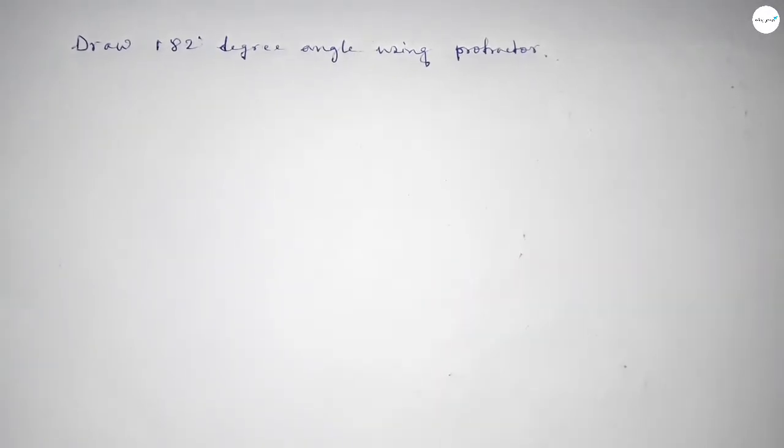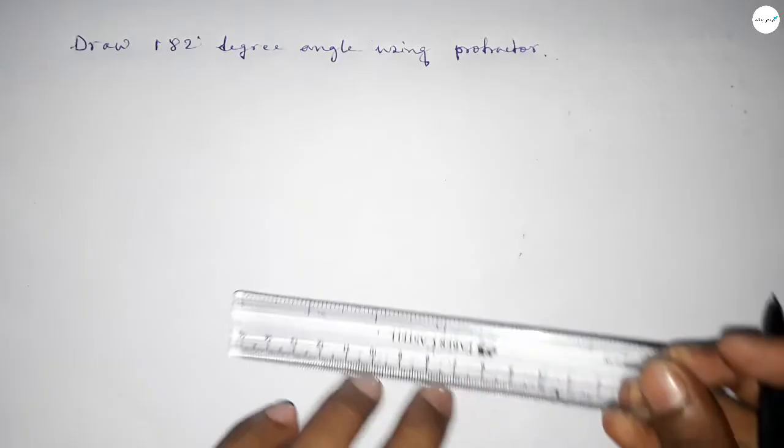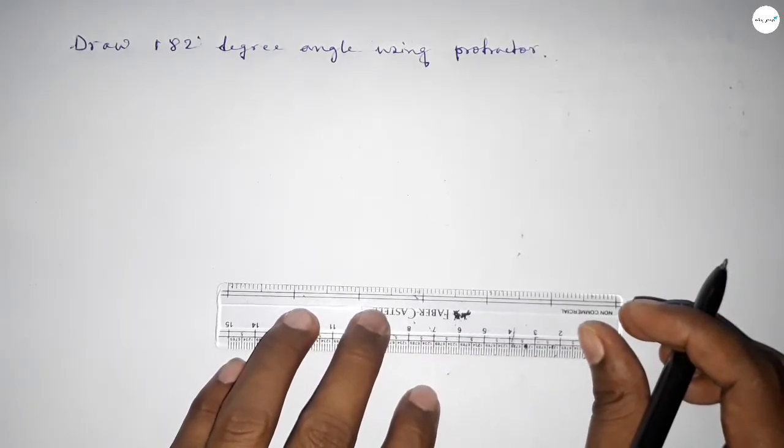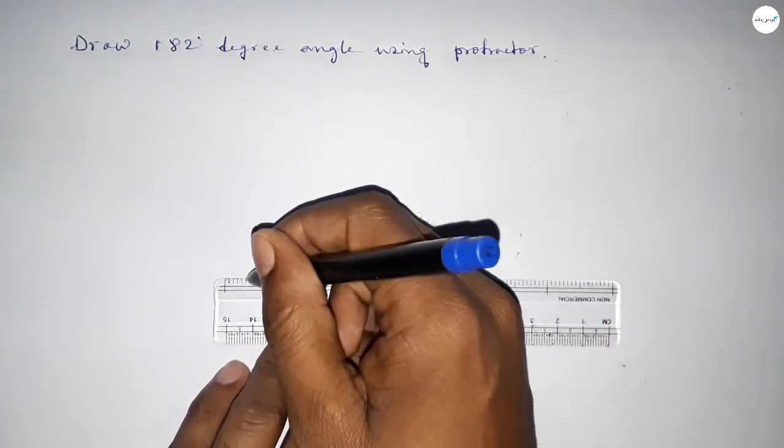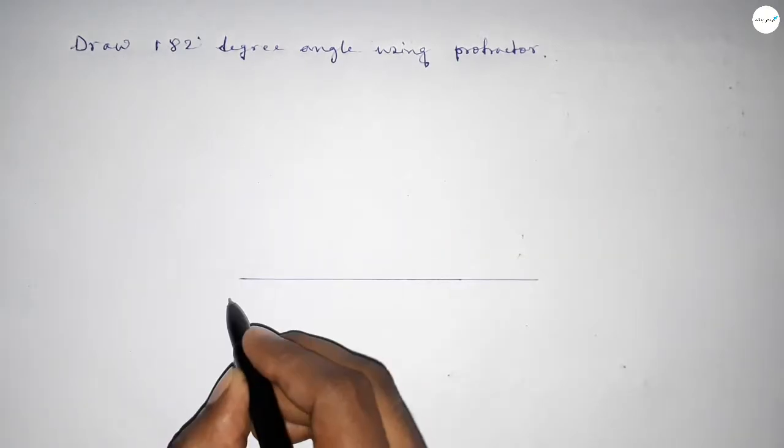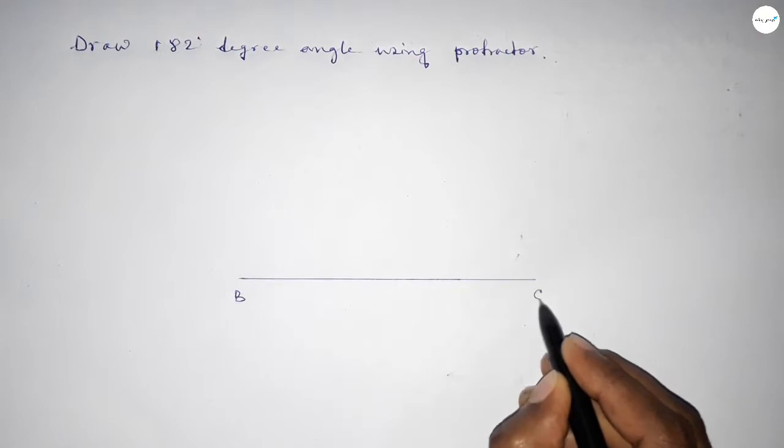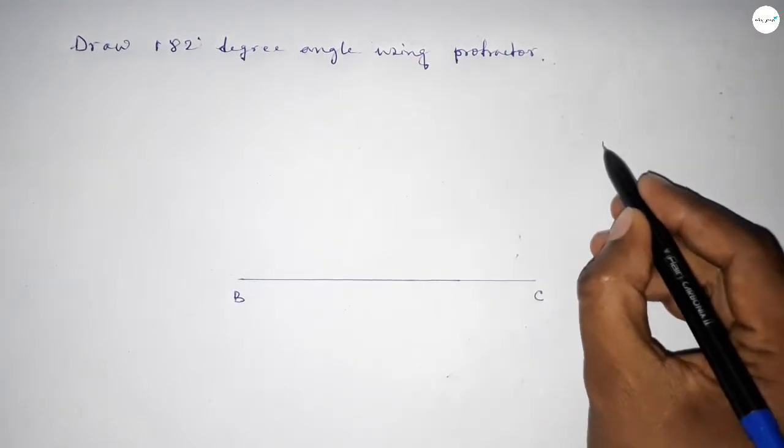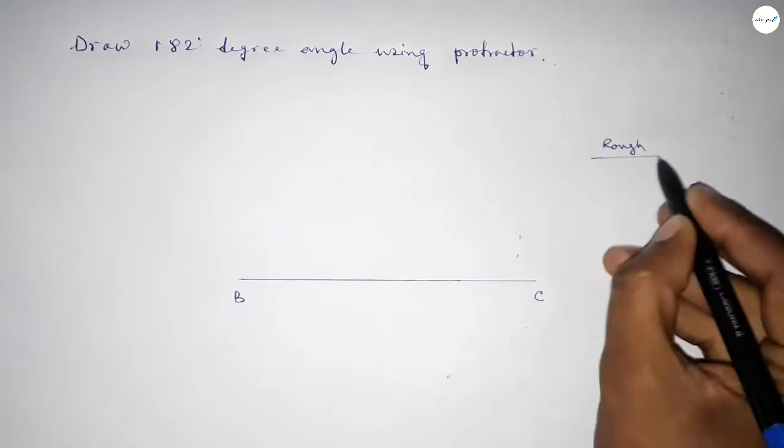Let's start the video. First, we draw a straight line of any length. Next, we mark point B and point C on the line, then draw some rough workspace.